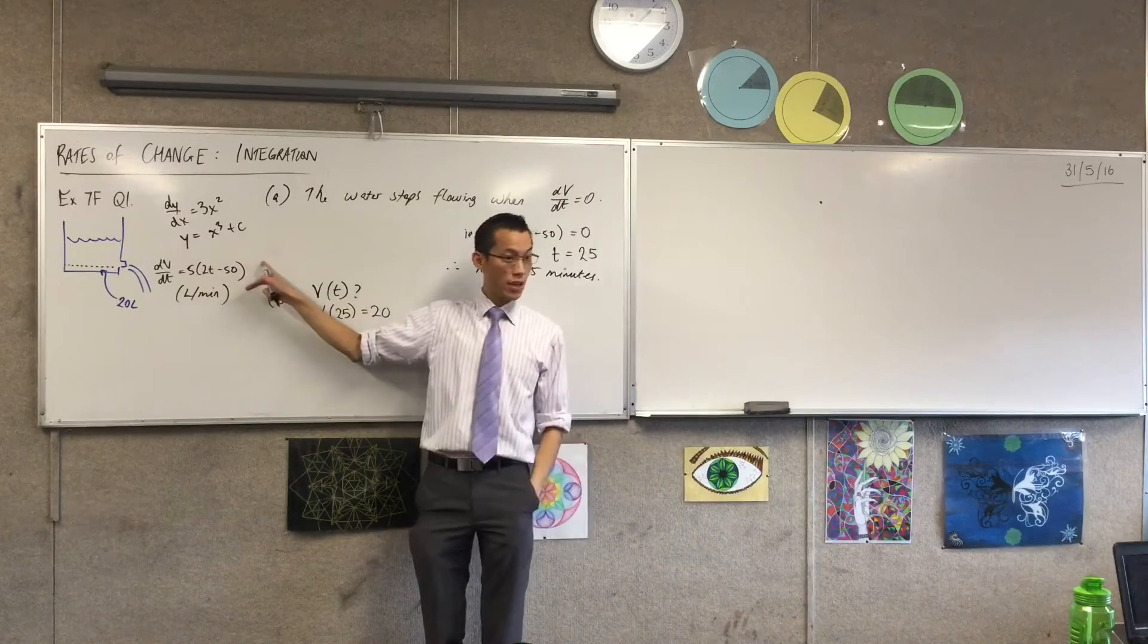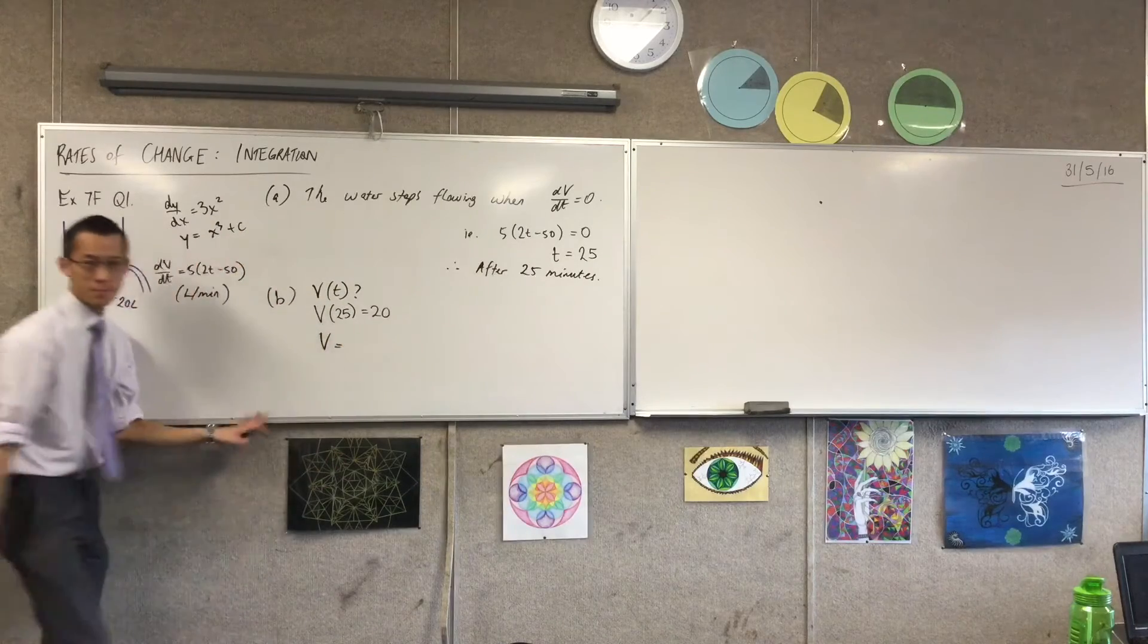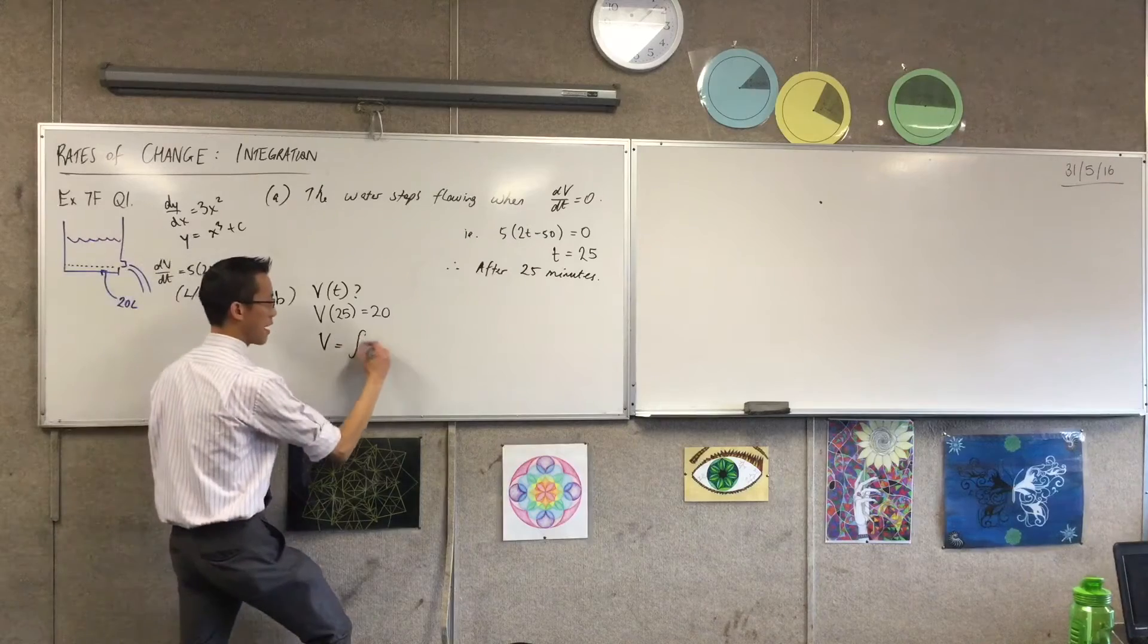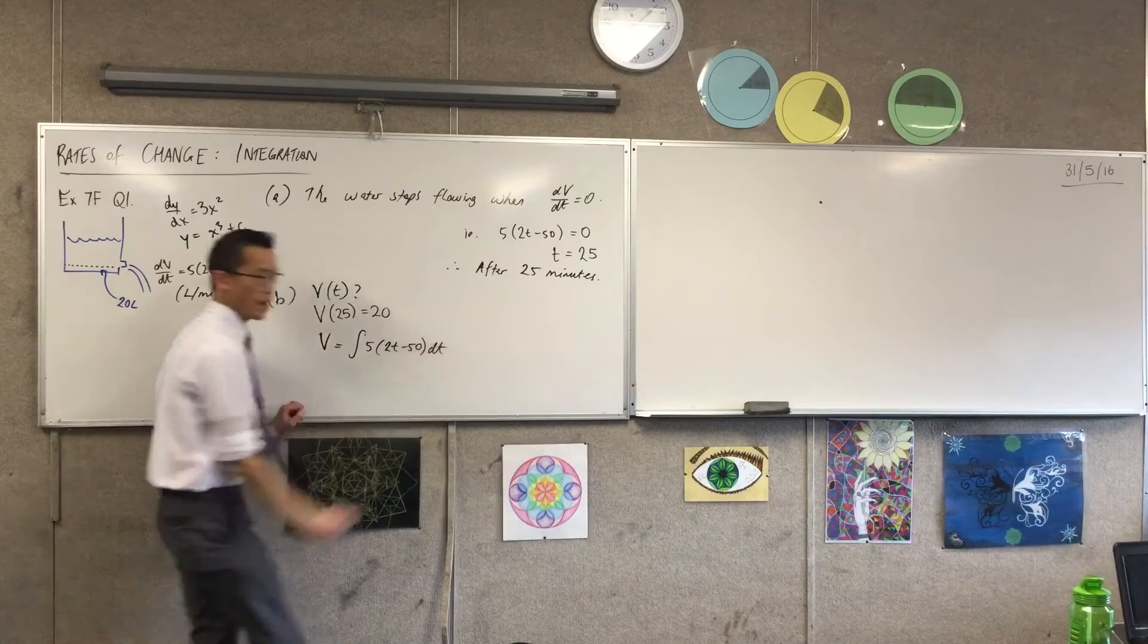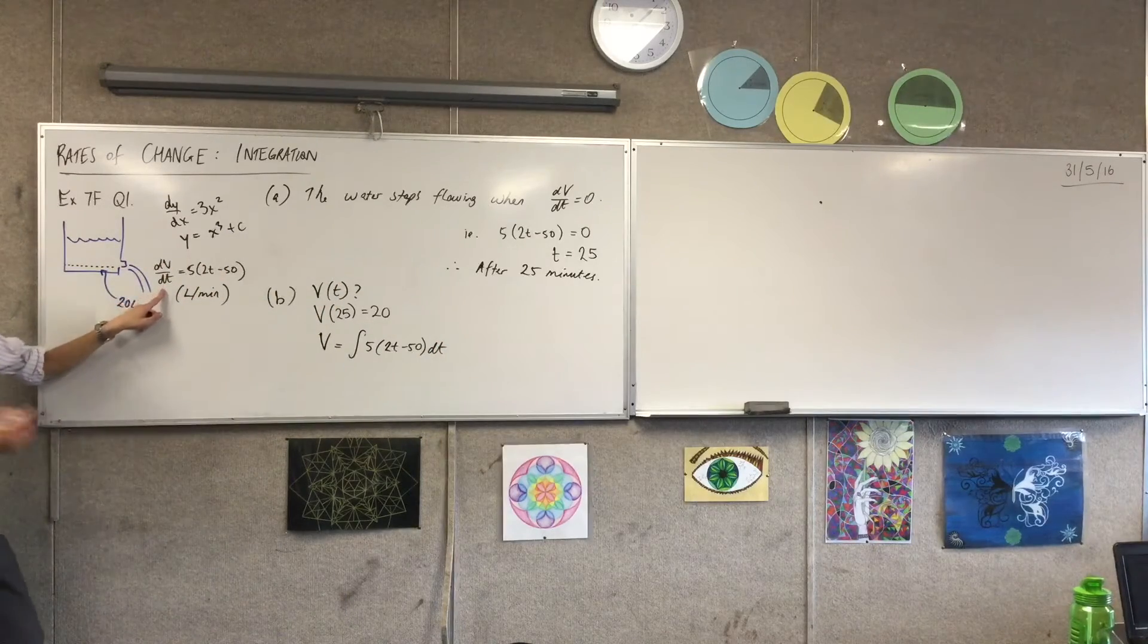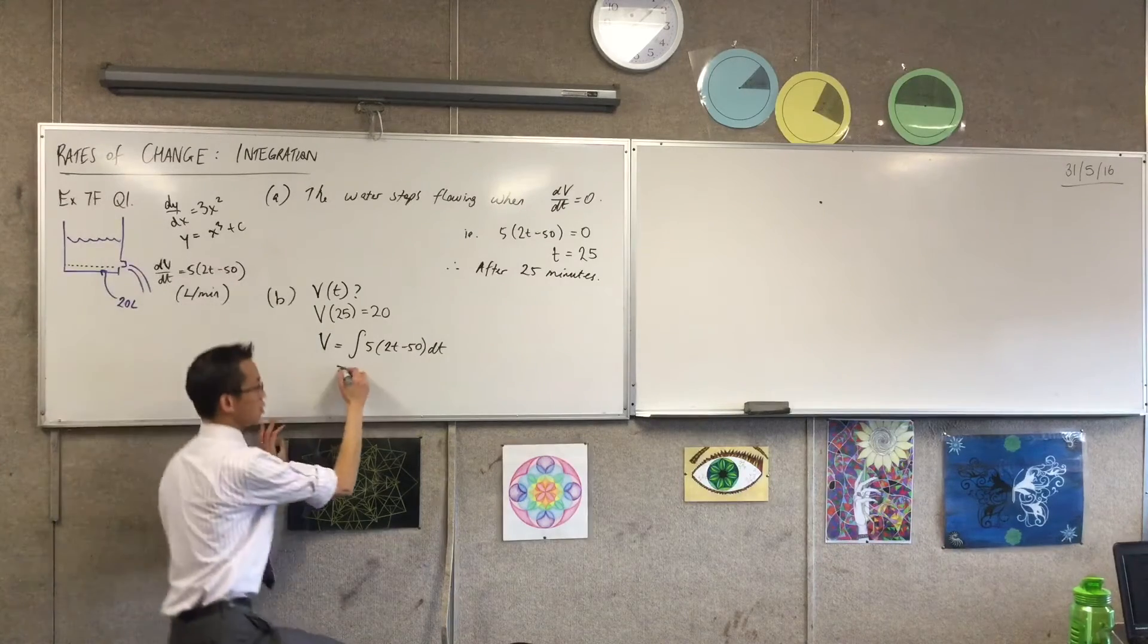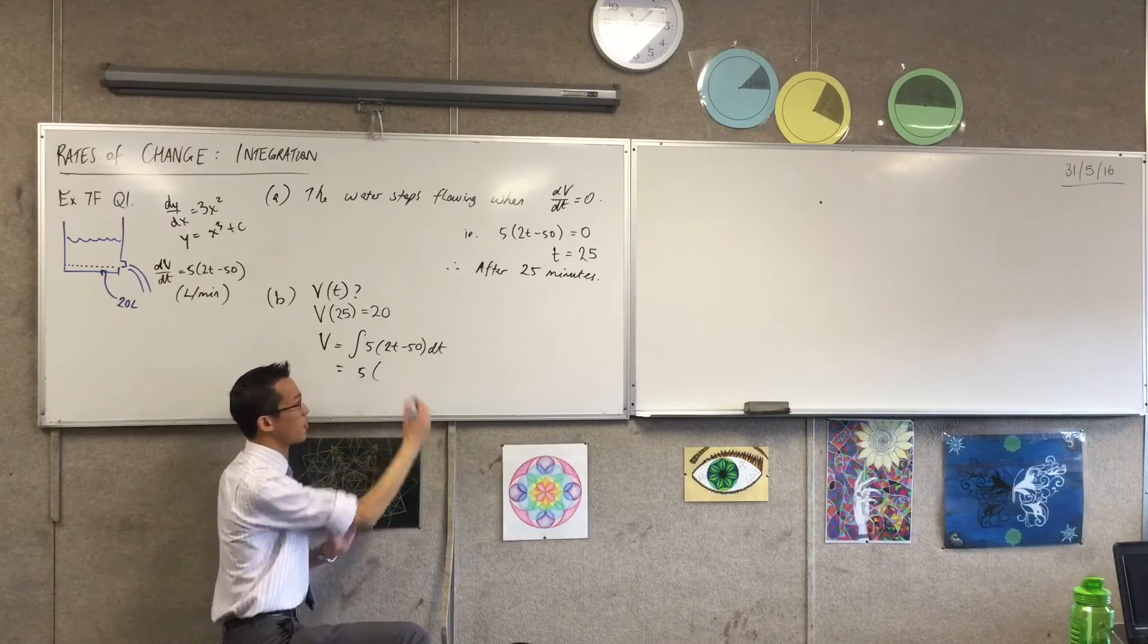I've got an expression for dV/dt, so in order to move towards an expression for V, I need to integrate this guy. So I'm going to integrate that whole function, 2t minus 50, and I'm doing it with respect to time, because this is a derivative with respect to time. Okay, let's have a look at this. I'm going to pull that 5 out the front, and this is a pretty easy integral. Can you tell me what we're going to end up with?